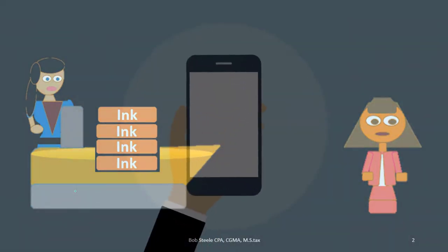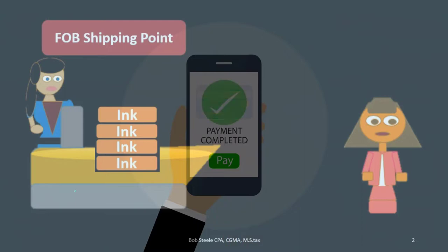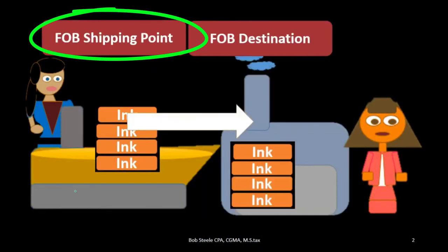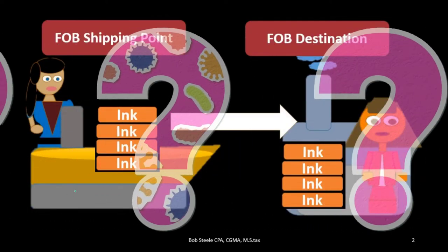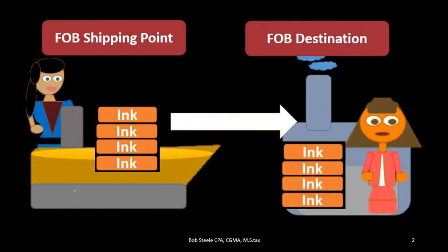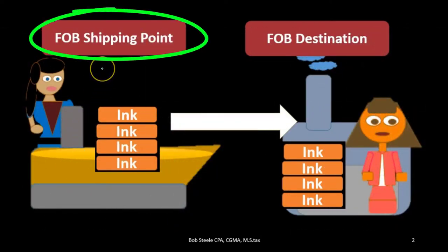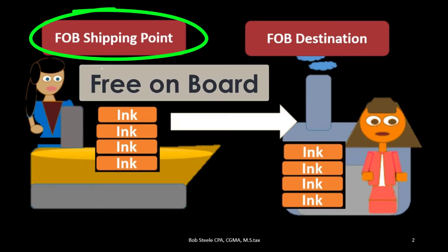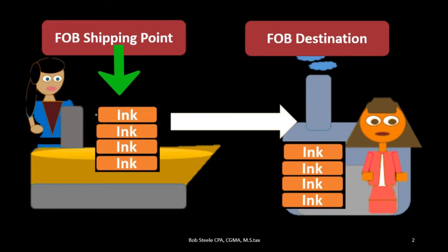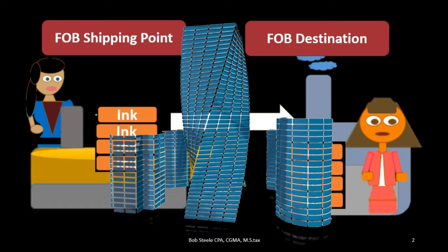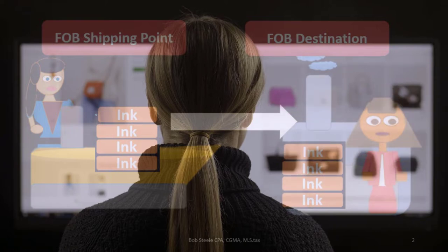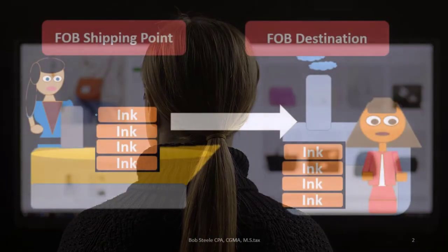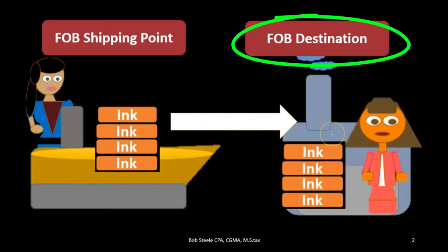One consideration is whether we have to pay for shipping costs, which typically depends on the terms of FOB shipping point or FOB destination. If something is FOB shipping point — freight on board shipping point — then the inventory changes hands and becomes the responsibility of the purchasing company at the point it is being shipped, and the purchaser is typically in charge of the shipping costs to get it to their warehouse.